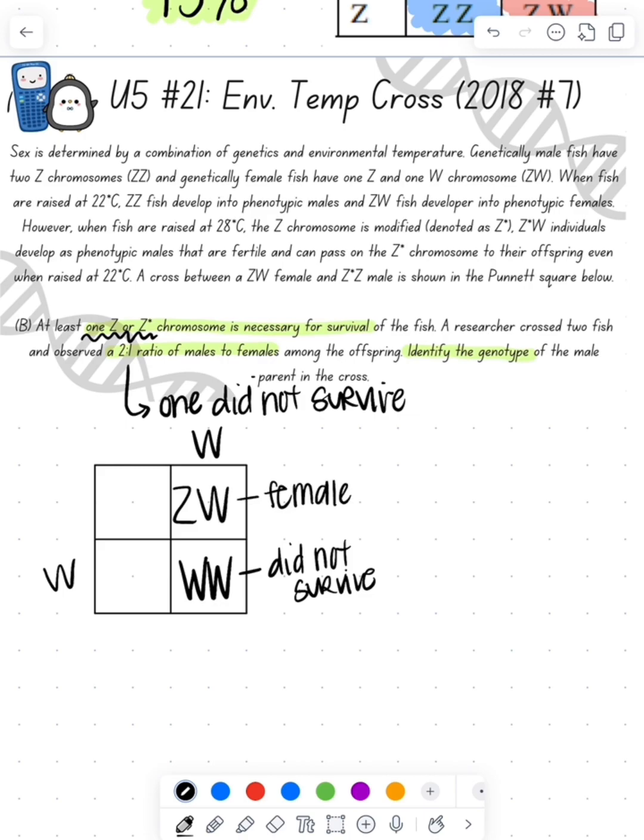We can move our Z out to the outside to say one of the parents is a ZW, which would be the female, which is logical. And then that tells us that this one right here would be a male because we have a Z and a second Z, which will be our male.